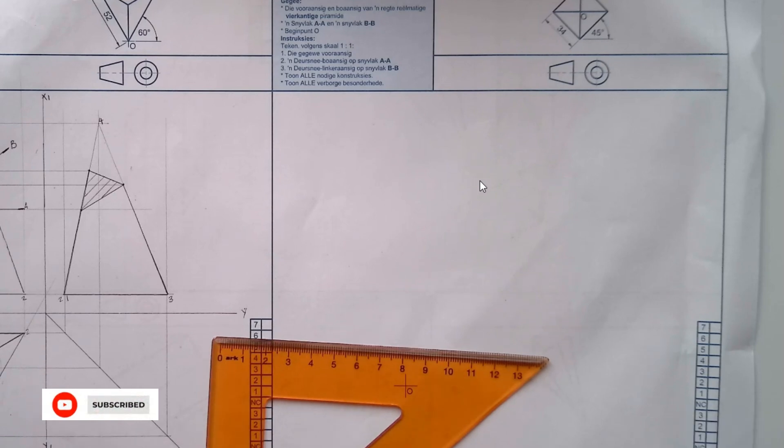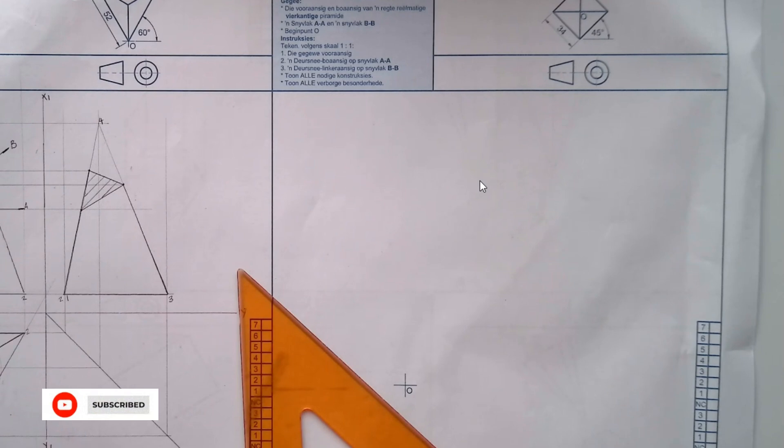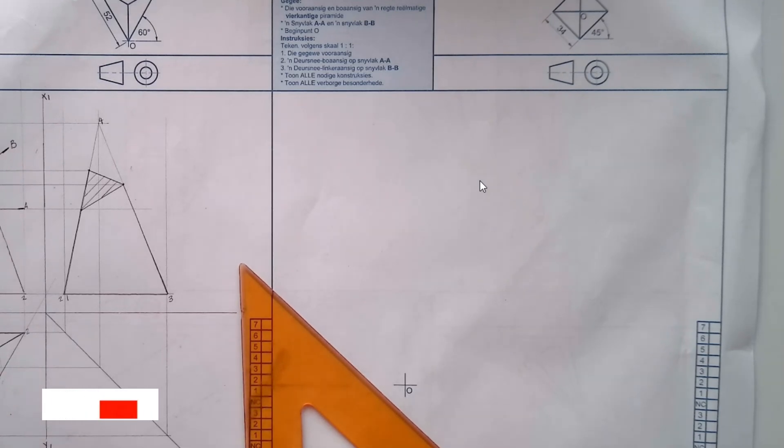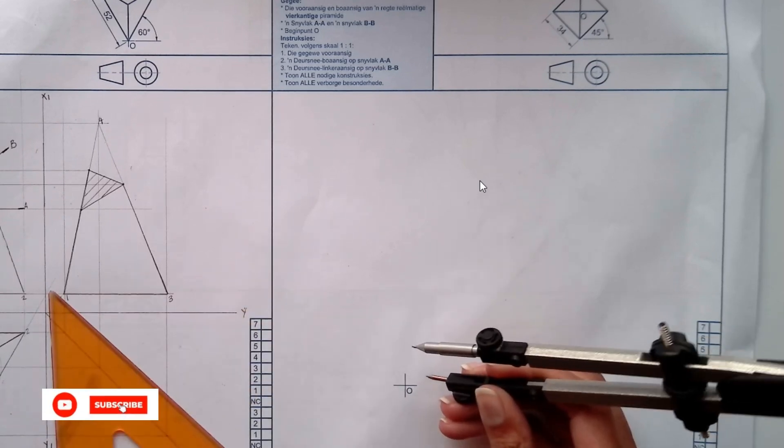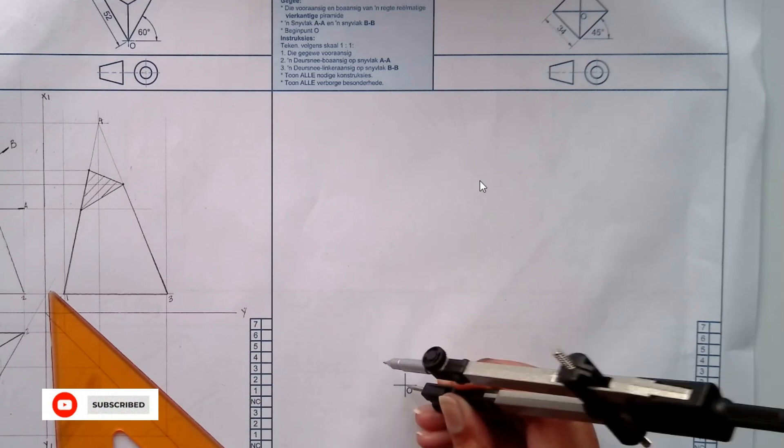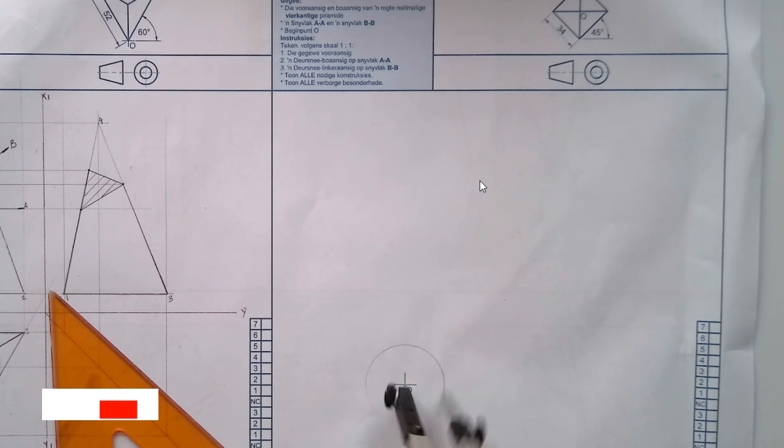So we are going to use half of 34 which is 17 and draw a circle. Our pole is given there, so we are going to draw a circle.